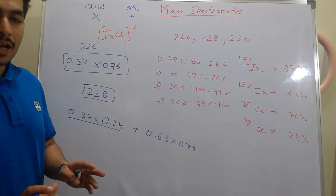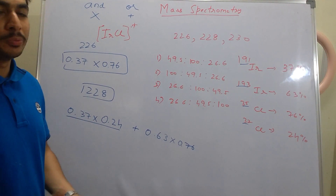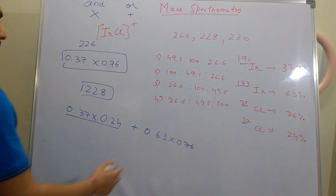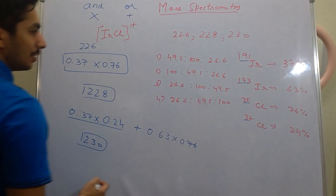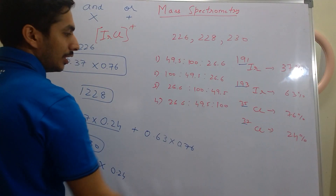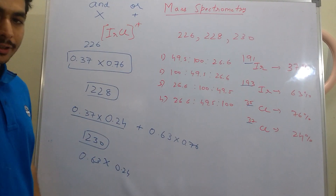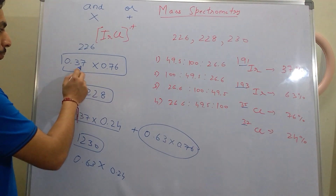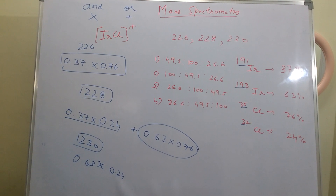Anything you study — whether permutations and combinations or anything else — will always be useful and never go to waste. For m/z = 230, there is only one possible combination: Ir-193 + Cl-37, since 193 + 37 = 230. So the intensity is simply 0.63 × 0.24.